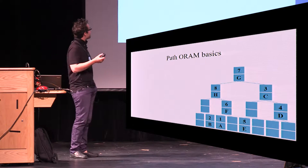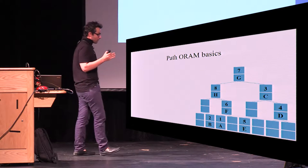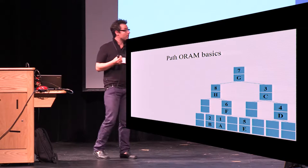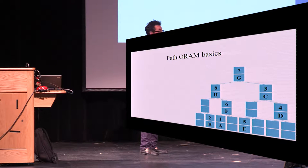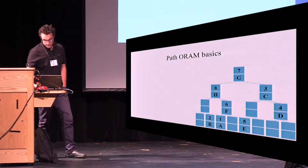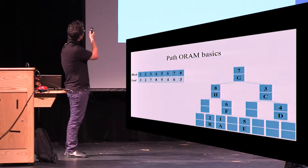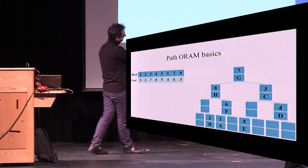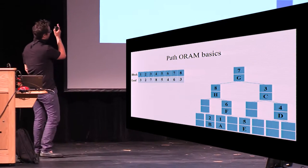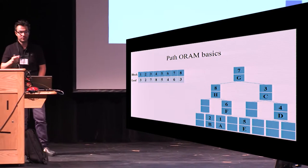Let me describe our approach, starting with some path ORAM basics. The goal is that we have eight blocks, and we want to access them obliviously. We distribute them randomly in a binary tree of eight leaves. We keep a position map that tells us: if you want to access block one, start from leaf three and go up to the root — you'll find the block on this path. If you want to access block four, start from leaf eight and go up.